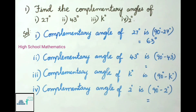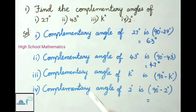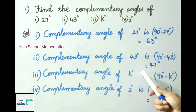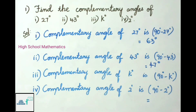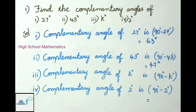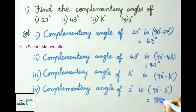Third one: complementary angle of K degrees is 90 minus K degrees. Here K is a variable, so we don't know the exact value, so the answer is 90 minus K. Fourth one: complementary angle of 2 degrees is 90 degrees minus 2 degrees, that is 88 degrees.